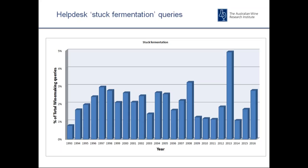Suppliers like Lallemand and Laffort also receive queries on stuck ferments, and winemakers might seek advice from other winemakers they know. So these aren't all the stuck fermentation problems across Australia — it's just the ones that people come to us with. It can be difficult to say how big a problem stuck fermentation is every year, but certainly the data shows it does turn up. Looking at 2008, 2013, and 2016, those were years where we had heatwaves around the country, and our more recent experience is that heatwaves certainly increased the likelihood of stuck fermentations.